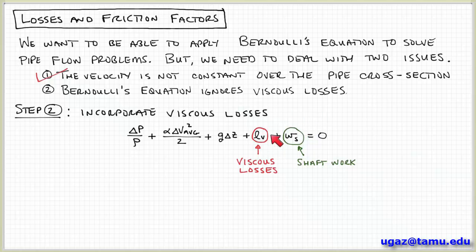Then an additional term, this L sub V term, which represents the viscous losses. So if we can find a way to collapse these viscous effects into this one term, then that would be very useful, because then we can still use Bernoulli's equation to solve problems involving pipe flow. We don't have to go back and solve the Navier-Stokes equations for every problem that we want to solve. But the question is how do we do that? How do we express this viscous loss term? So we need to find a way to do that.